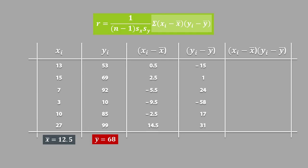For the next step, we will have to multiply each of these terms together. So we will have 0.5 times negative 15, and for the second row, we will have 2.5 times 1, and so on.